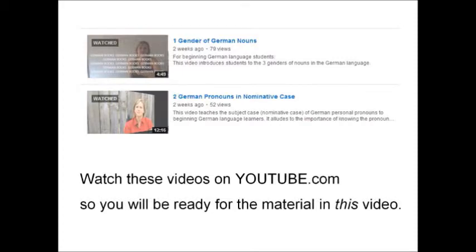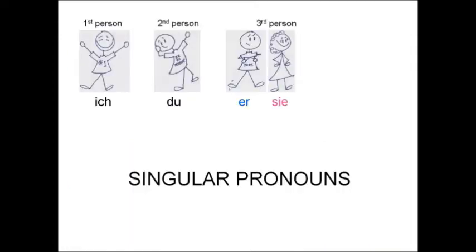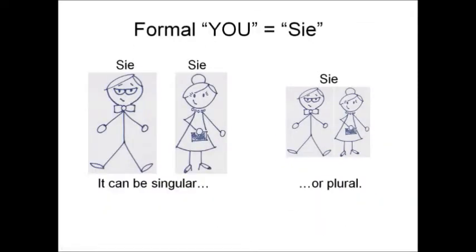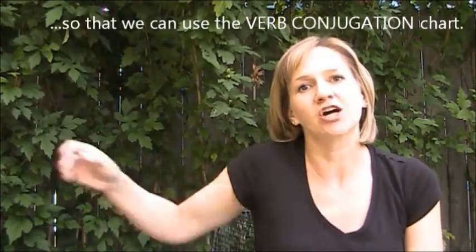We've learned that there are three genders of nouns, and in the second video we learned our personal pronouns: ich, du, er, sie, es, wir, ihr, sie, and sie. We need to know those pronouns so that we can access our handy-dandy charts and learn how to put the correct form of the German verb in a sentence to match whatever subject that sentence has.